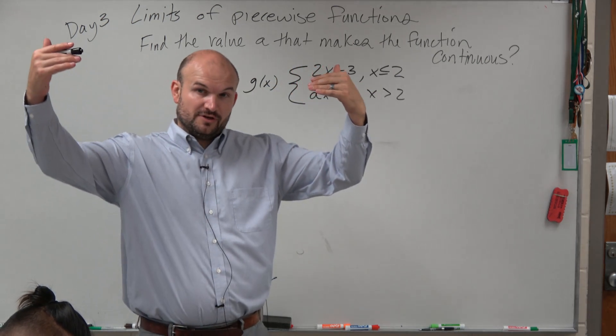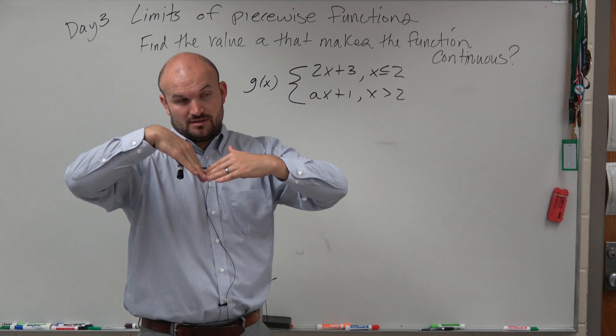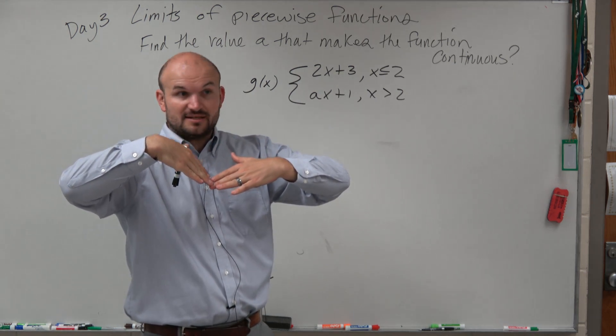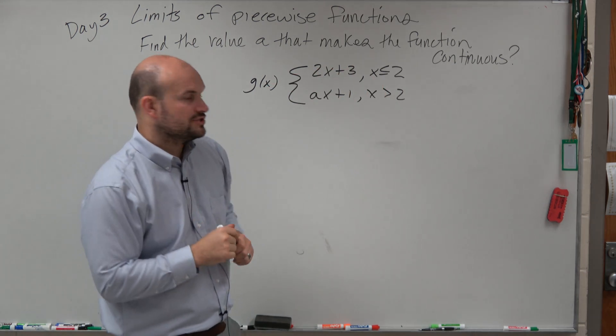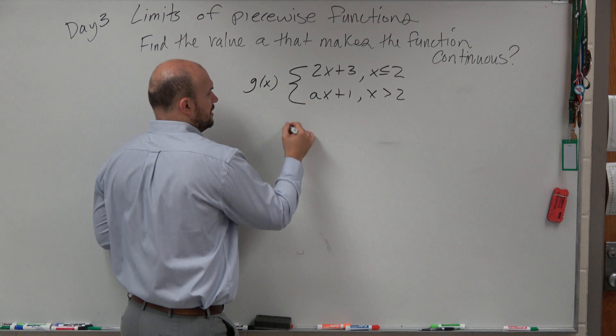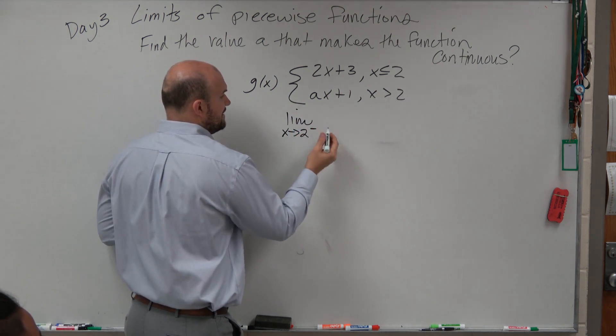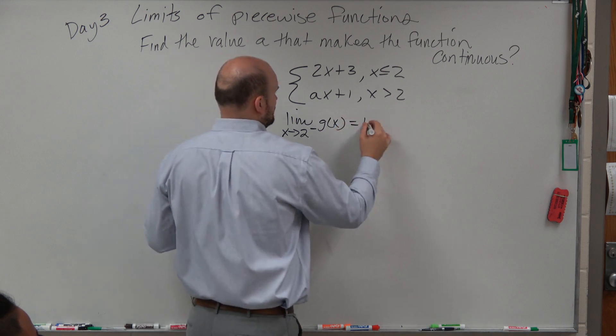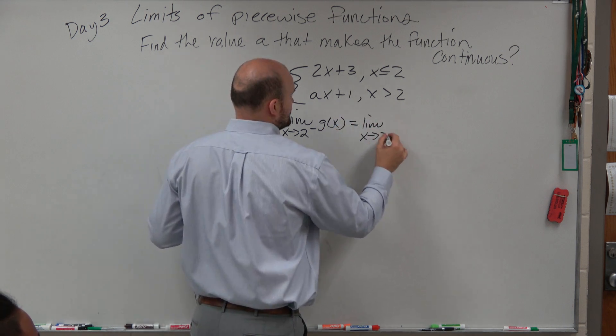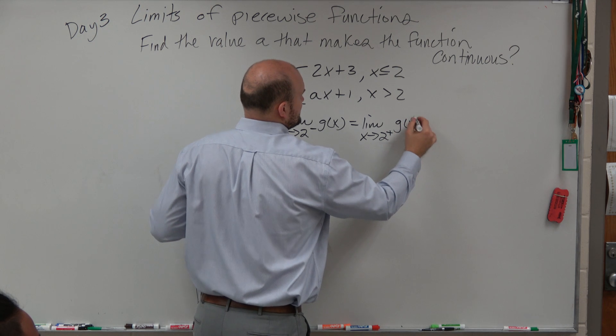So if we know that the left and right hand limits are equal, that means we know that they're connected because it's a piecewise function, therefore we can show that it is continuous. So all I really need to do is say the limit as x approaches 2 from the left of g(x) has to equal the limit as x approaches 2 from the right of g(x).